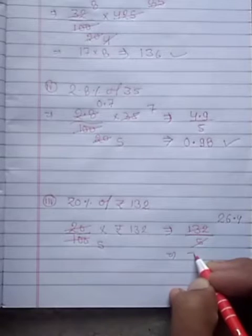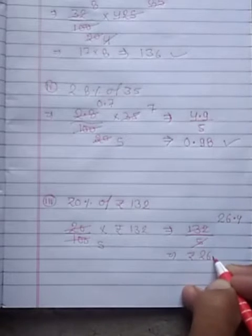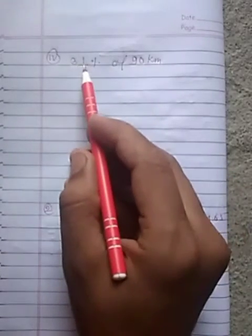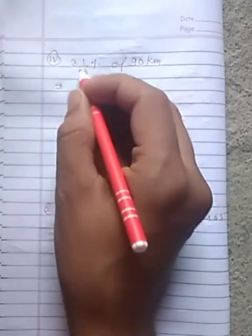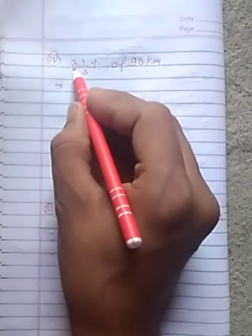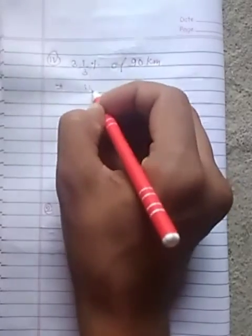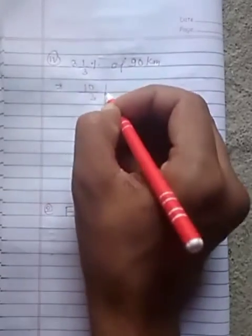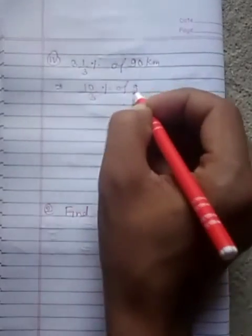Clear? 26.4. 3 into 1 by 3 percent of 90. Clear? Convert improper fraction. 3, 32, 9, 9, 1, 10. 10 upon 3 percent of 90 kilometer.